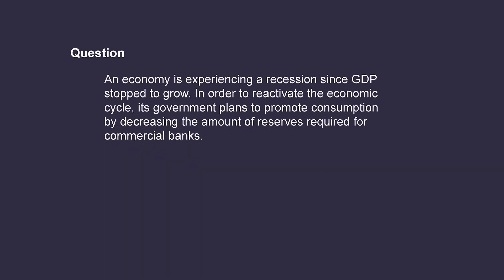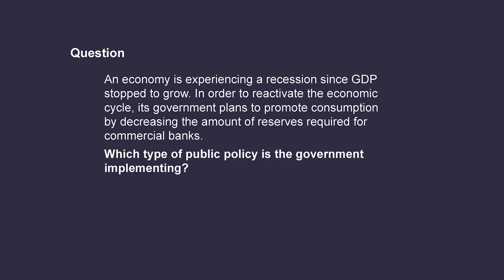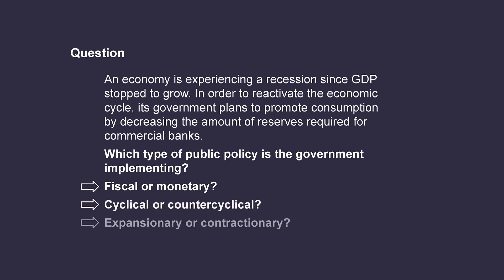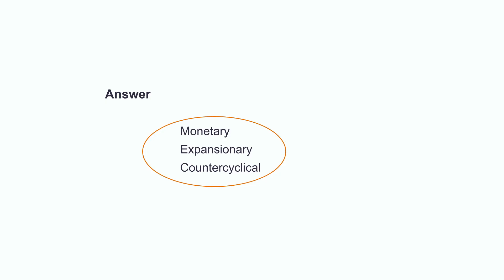Now it's time for a quick exercise. An economy is experiencing a recession since GDP stopped growing. In order to reactivate the economic cycle, its government plans to promote consumption by decreasing the amount of reserves required for commercial banks. If you answered monetary, expansionary, and counter-cyclical, you are correct. Since the country is in recession and the government intends to boost the economy, the policy is counter-cyclical and expansionary. And the methodology seeks to expand the money supply, which makes it a monetary policy.